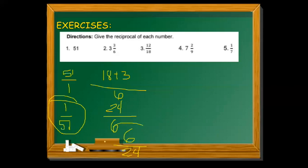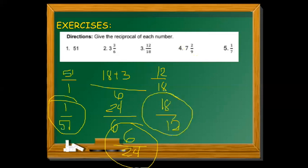This is the reciprocal. And then 12 and 18. The reciprocal of 12 and 18, we just reverse it: 18 over 12.